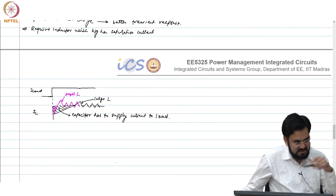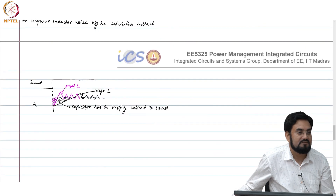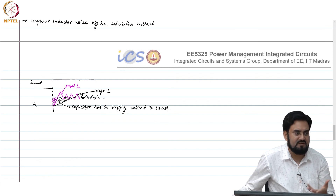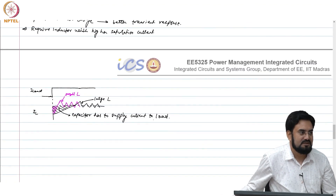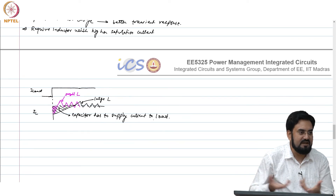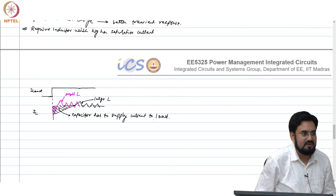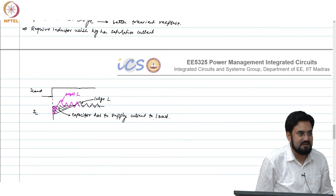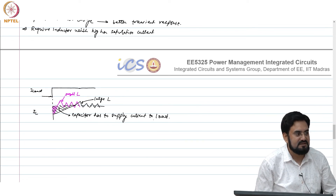Saturation of an inductor is typically defined when the inductance falls 30% below its nominal value — for example, if you are using 1 microhenry, the current at which it drops to 0.7 microhenry defines the saturation current. That is soft saturation; there is also hard saturation where inductance falls very quickly. Magnetic core inductors typically exhibit hard saturation; iron core or air core inductors tend to show soft saturation. Regarding the question about inductors implemented using other elements such as gyrators — those cannot carry the required load current.